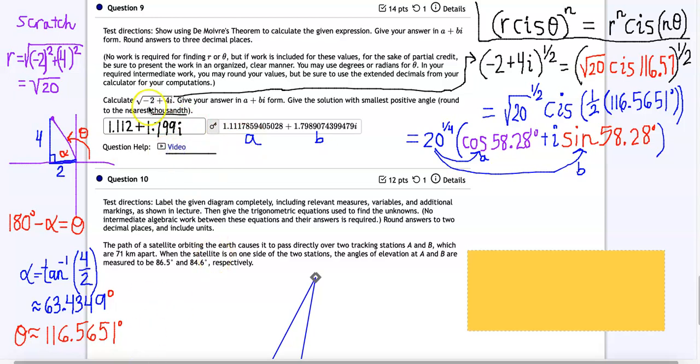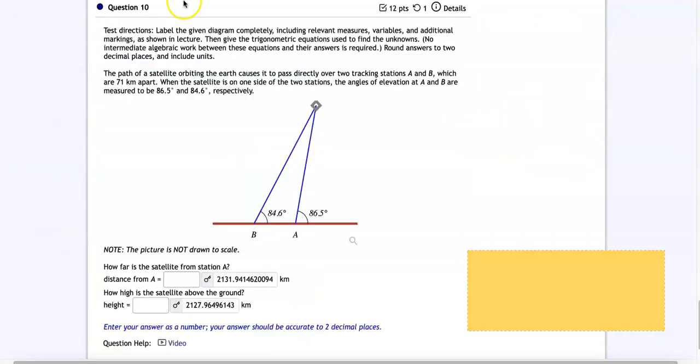And now we have the satellite problem as our last problem. Now on the test your diagram will be a little bit bigger to work with than this one is. And you are going to want to label it according to what you are given. So now let me try to get a bigger version of this. Okay so same diagram just bigger. You need to add some extra information. So the first thing you're going to want to add is the distance between a and b which you will find in your paragraph. In this case we have 71 kilometers apart so I'm adding 71.